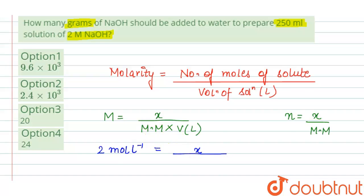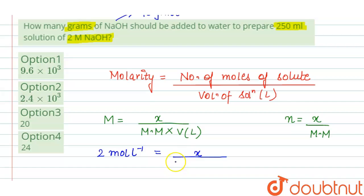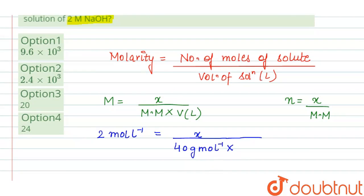...the molecular mass of NaOH is 40 gram per mole, so it will be 40 gram per mole times the volume of solution in liters. The volume is given as 250 ml. We will convert it to liters by dividing by 1000.